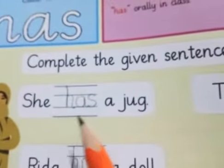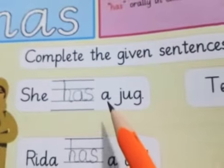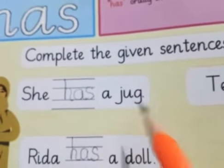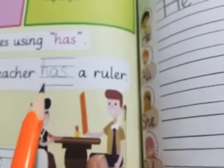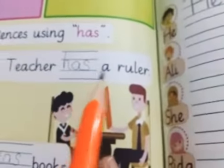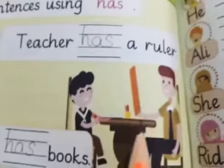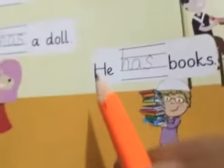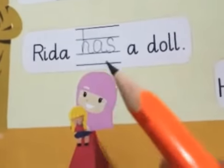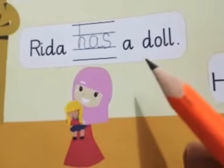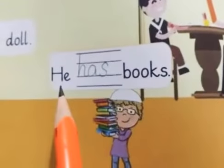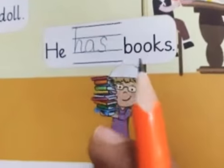She has a jug. Teacher has a ruler. Rida has a doll. He has books.